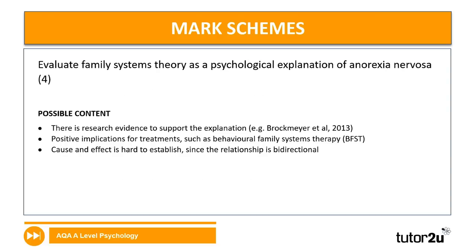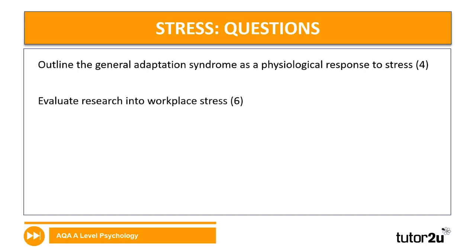Evaluate family systems theory as a psychological explanation of anorexia nervosa for four marks: research evidence, positive implications for treatments such as behavioural family systems therapy (BFST), and cause and effect is hard to establish since the relationship is bidirectional. For the stress section: outline the general adaptation syndrome as a physiological response to stress for four marks, and evaluate research into workplace stress for six marks — ten marks total, roughly 13 to 14 minutes. Pause to attempt these before moving on.